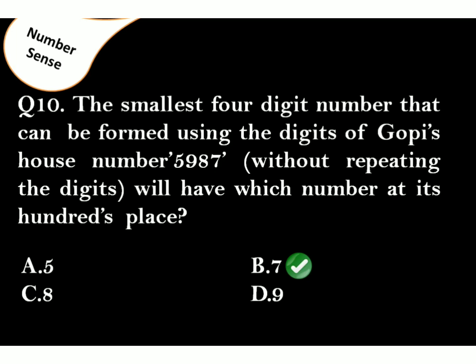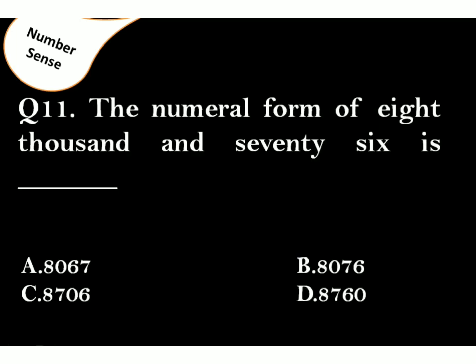The correct answer is Option A. The smallest number will be 5-7-8-9 by arranging them in ascending order. So, 7 will be at 100's place. The numeral form of 8076 is. The correct answer is option B.